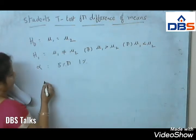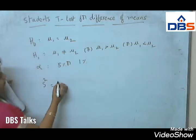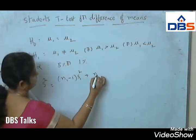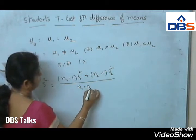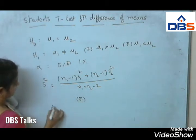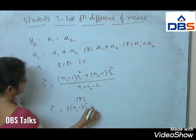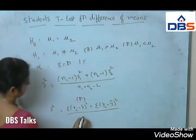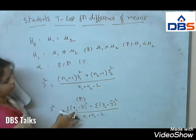For this, first we have to find S squared equal to N1 minus 1 into S1 squared plus N2 minus 1 into S2 squared, divided by N1 plus N2 minus 2. Or another formula is: sigma of (Xi minus X-bar) whole squared plus sigma of (Yi minus Y-bar) whole squared, divided by N1 plus N2 minus 2. As per the given data, we can use any formula.